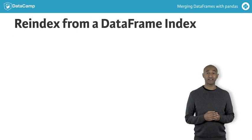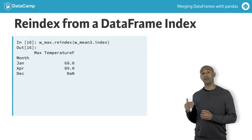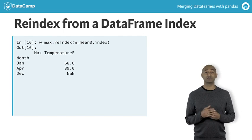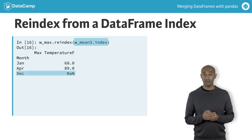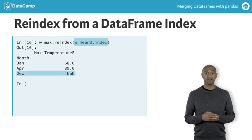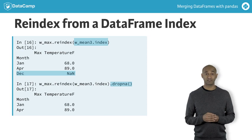We can also use reindex to see where data frame rows overlap. Here, we reindex W_max with the index of W_mean_3, showing that W_max does not have a row labeled December either. Using the method dropna removes entire rows in which null values occur — this is a common first step when merging data frames.